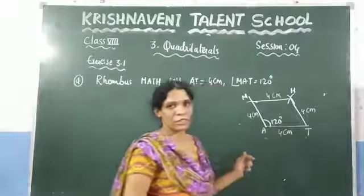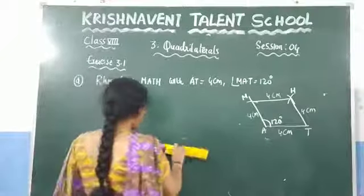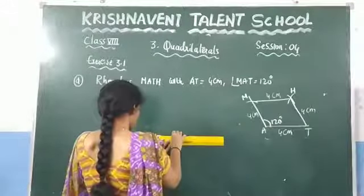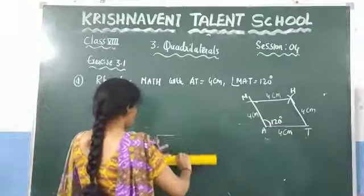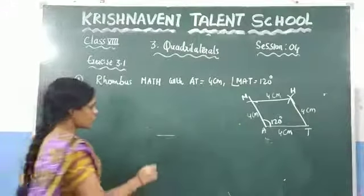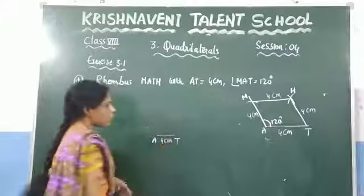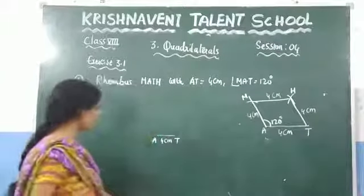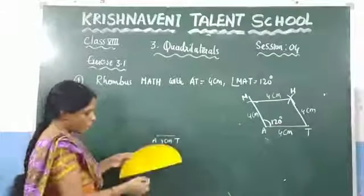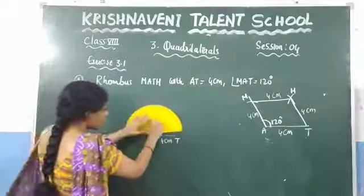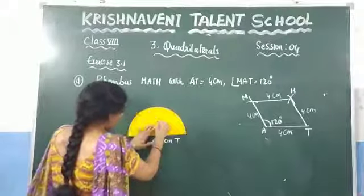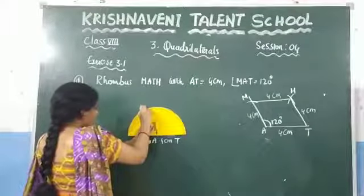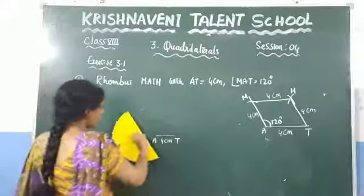We need to draw a line segment of length 4 cm first — draw a line segment of 4 cm. Mark it as AT. The length of AT is 4 cm. Now at point A, make an angle of 120 degrees with the help of the protractor. The vertex A and the arrow of the protractor coincide. Keep the protractor, and you know that 90, 100, 110, and 120 degrees — keep it clear at 120. Keep one dot and join this dot with point A.